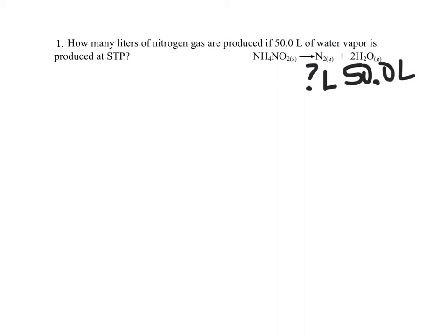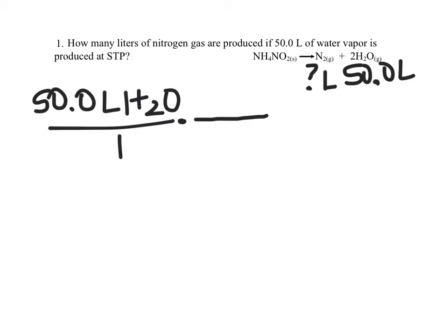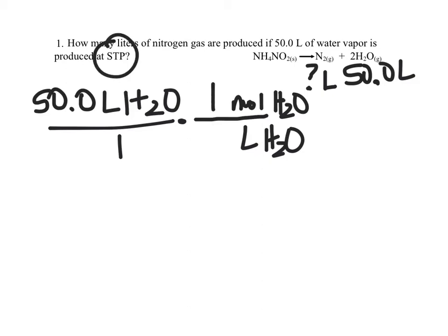So let's go back to that problem. We have 50 liters of water vapor to start with. Just like a regular stoichiometry problem, we start with what we know. I've got 50 liters of water vapor, and I'll put that over one to make it a fraction and go into my factor label. I want to get rid of those liters of water and go to moles, because we need our mole ratio from the balanced chemical equation to switch substances. We are at STP, so one mole of any gas at STP has a volume of 22.4 liters.